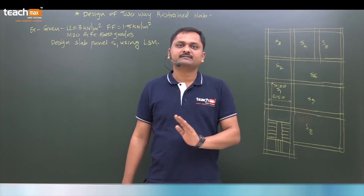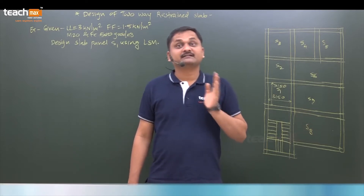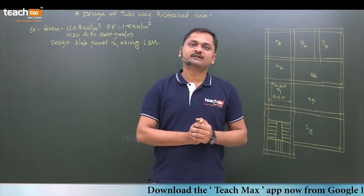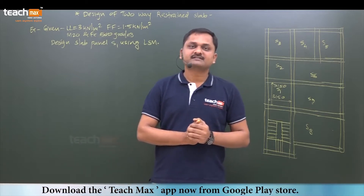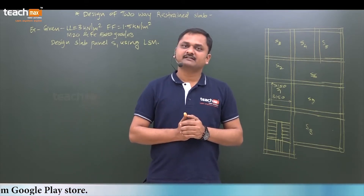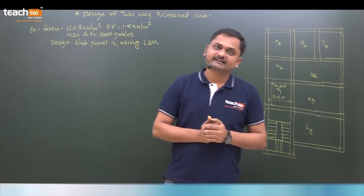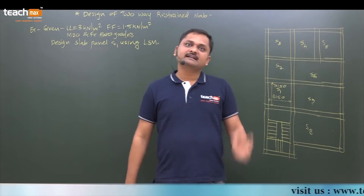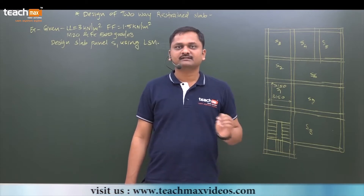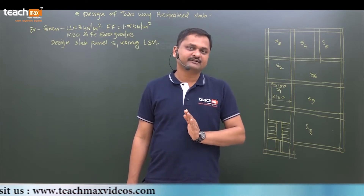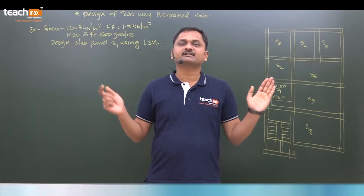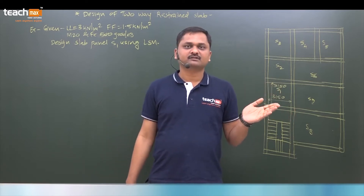The second case, which we saw in the previous lecture, is the restrained two-way slab. If the edges are restrained at the ends, we need to provide torsional reinforcement at the ends. In restrained slabs, negative moments occur at the ends and are carried by providing reinforcement at the top. There are nine cases total, out of which we saw one example — the ninth case — where all edges are discontinuous but restrained.